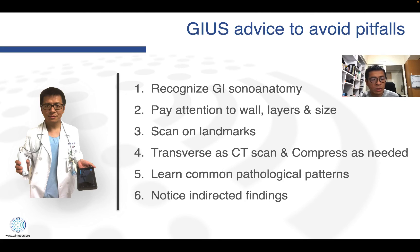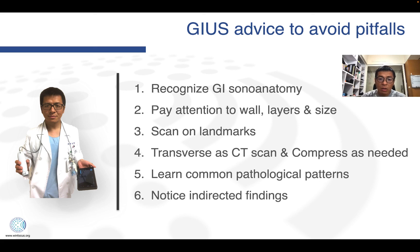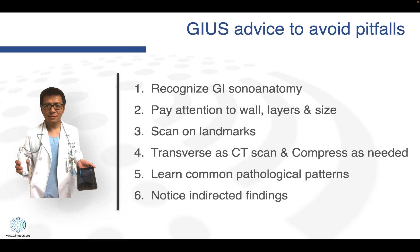My advice to avoid pitfalls when performing GI ultrasound: first, recognize GI sonographic anatomy from esophagus, stomach, small bowel loops, and colon. Pay attention to the wall layers and the diameter of the bowel size. Scan on landmarks, whether it's from the EC junction, right lower abdominal part, or rectum. Use transverse scanning like a CT scan, and compress only when needed. Learn those common pathological findings, and especially notice some indirect findings — sometimes those indirect findings can lead us to find the direct abnormalities.